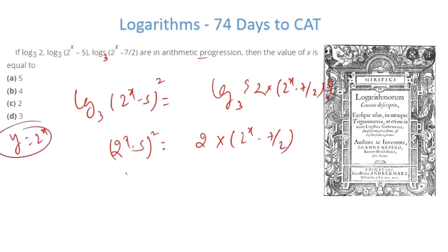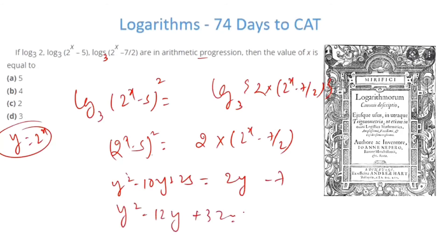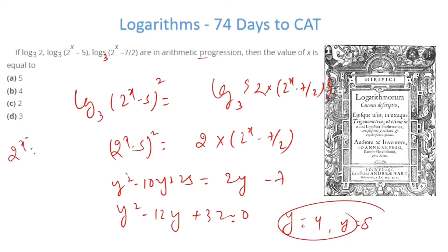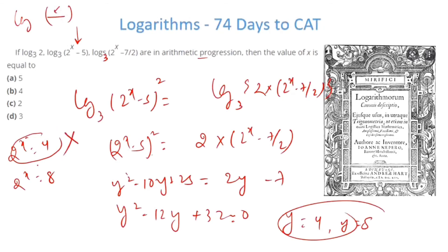Removing the logarithm: (2^x − 5)² = 2·(2^x − 7/2). Let y = 2^x. Then y² − 10y + 25 = 2y − 7, giving y² − 12y + 32 = 0, so y = 4 or y = 8. If 2^x = 4, the input to one logarithm becomes negative, which is not allowed. So 2^x = 8, giving x = 3. The answer is option D.